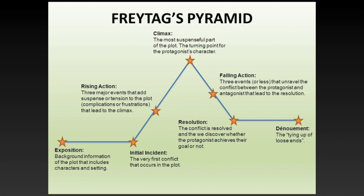Okay, so when you look at Freytag's Pyramid, this is what I'm talking about, and of course feel free to take a screenshot of this so that you kind of have it by your side to review as you're working through your homework this week. You can see it starts with the exposition, it moves on to the initial incident, the rising action, the climax, the falling action, the resolution, and then denouement is that fancy French word at the end there. And so what I'm going to do is take you through each of these stages with the story Harry Potter and the Sorcerer's Stone.